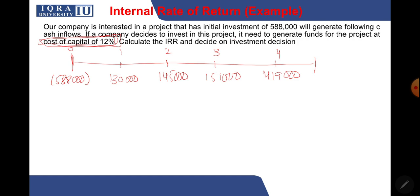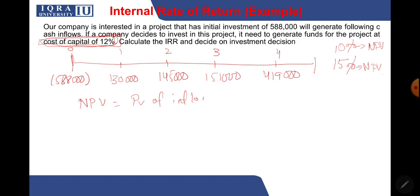To do that, we're going to randomly select two interest rates. The cost of capital is 12 percent, so I'll select a rate lower than that — 10 percent — and another rate of 15 percent. Now I need to calculate what the NPV is at each rate. The NPV formula is present value of inflows minus initial outlay — so I'll discount each cash flow back. Starting with 130,000 divided by (1 + 0.1)^1...